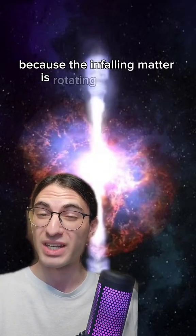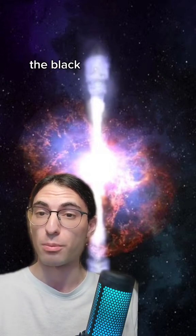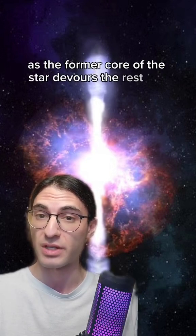Because the infalling matter is rotating so quickly, it's believed that the accretion disk that forms around the black hole produces relativistic jets. This generates the GRB that we see as the former core of the star devours the rest of it.